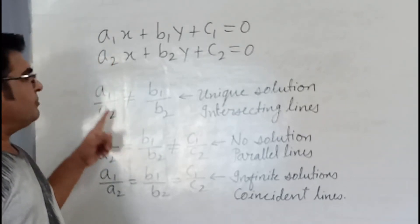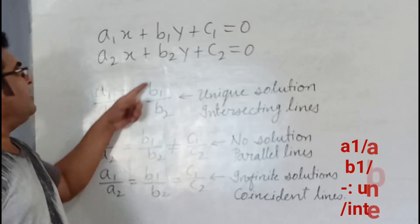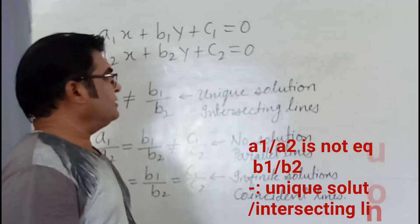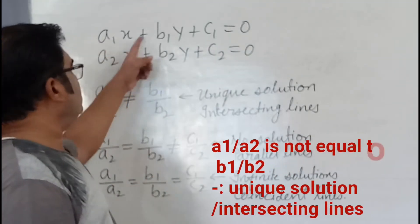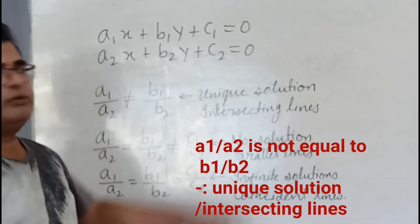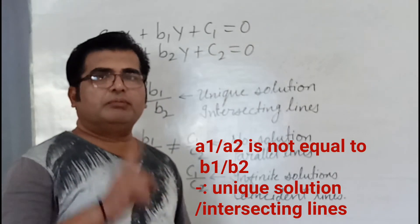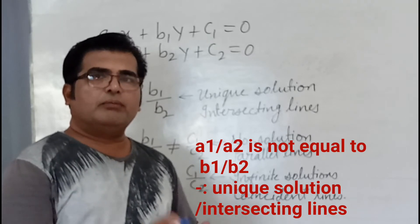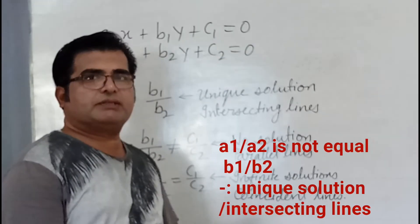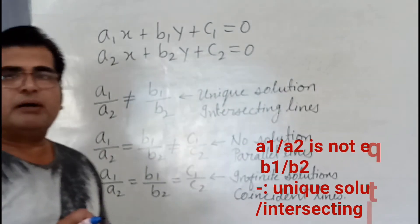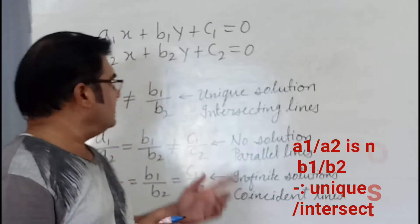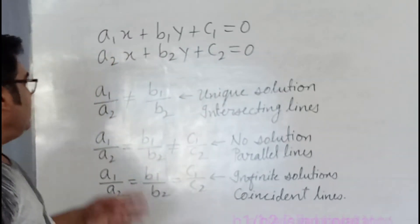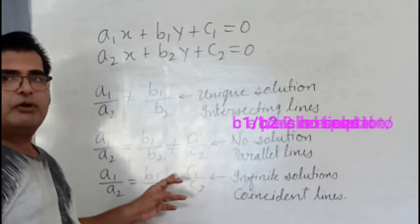There are some conditions. If a1/a2 is not equal to b1/b2, then there will be a unique solution — one common solution. You have to solve this type of equations. In the graphical representation, there will be intersecting lines.